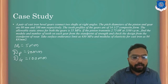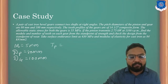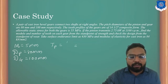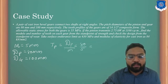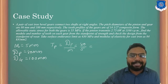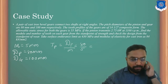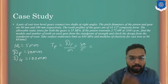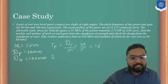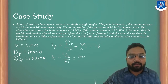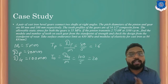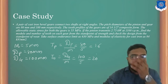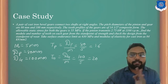Our number of teeth for a pinion will be Tp = Dp / M = 80 / 5 = 16. And for Tg = Dg / M = 100 / 5 = 20. So depending on the module, we have found out the number of teeth for the pinion and gear.